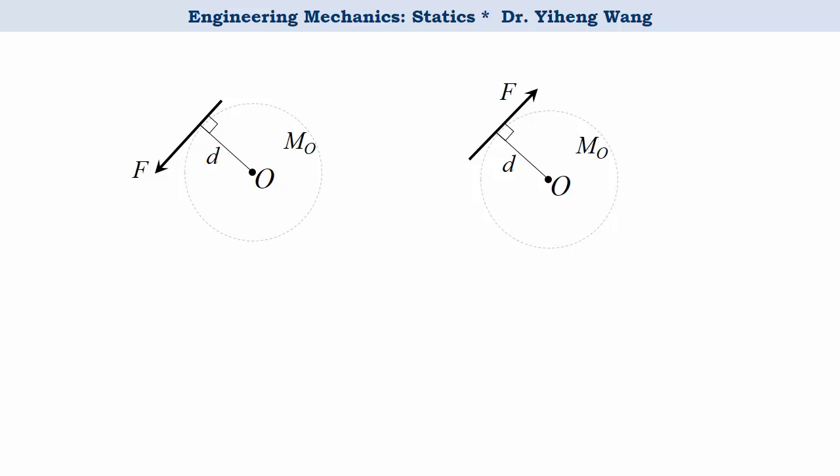With that understood, when we calculate the moment caused by a force F about a point O in a 2D plane, if the force creates a counterclockwise rotational effect about point O, the moment MO equals positive F times D.